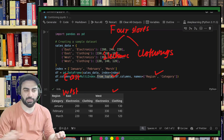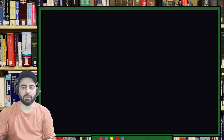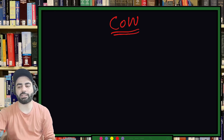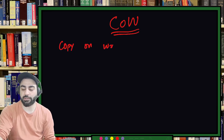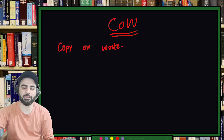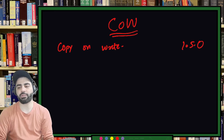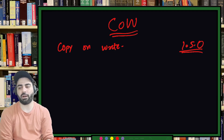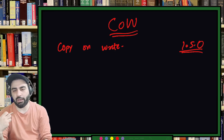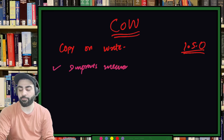Now one important concept I'd like to introduce here is called COW — Copy on Write. We talked about this briefly in Python but not in detail. You'll see a lot of animals in Python — Python itself is an animal. COW, copy on write, is a very important concept. It was introduced in pandas version 1.5.0 and from version 2.0 onwards, optimization was done through COW. Copy on write refers to an optimization technique aimed at improving memory efficiency.